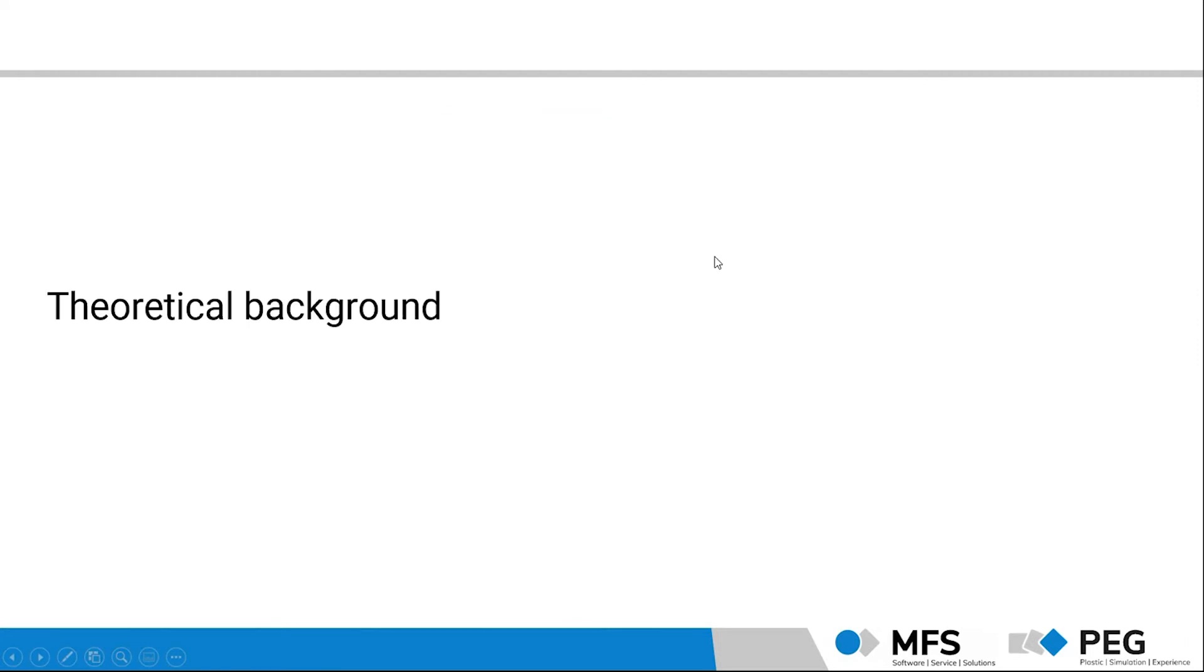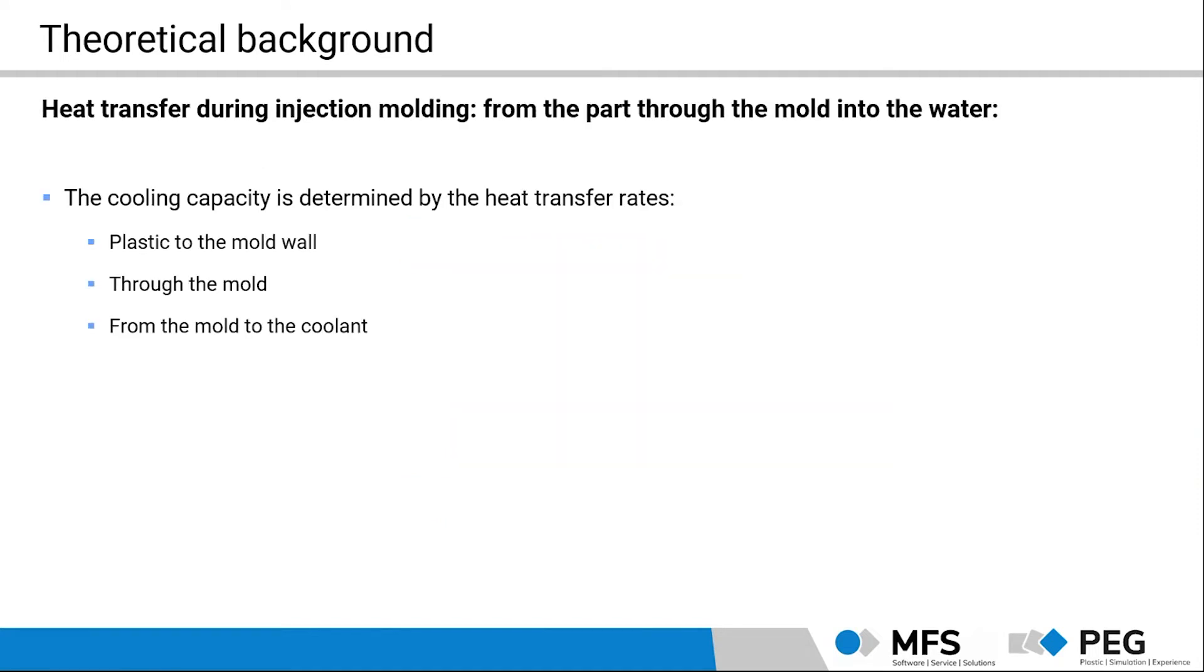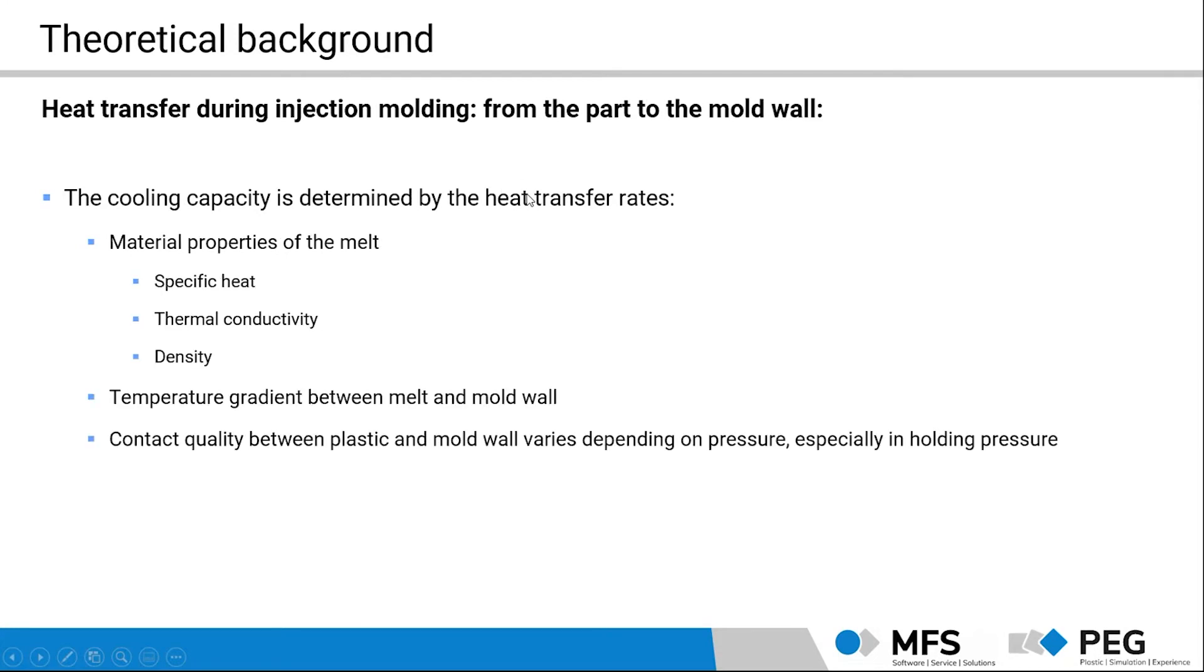Just giving some examples about what is discussed in the theoretical background during this training. We will talk about the heat balance in the injection mold. What is coming in and what is going out and how. And as we are most interested in how we get the heat out of the mold, the question is the heat transfer, how it is going. So the heat is coming from the part, going through the mold and into the water. How we can affect and how we can understand the heat transfer. What is determining.